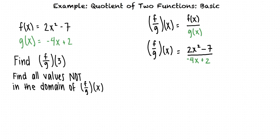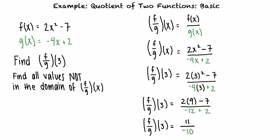To find f divided by g of 3, we must substitute 3 for x into the Quotient Function. When we simplify, our numerator becomes 11 and our denominator becomes negative 10. This tells us that f divided by g of 3 equals negative 11 tenths.